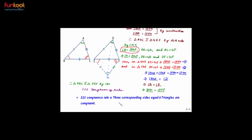Let's summarize what we have learned here. We have learned the SSS congruence rule: if in two triangles three corresponding sides are equal, then the two triangles are congruent.